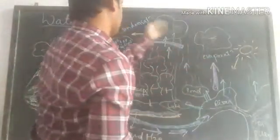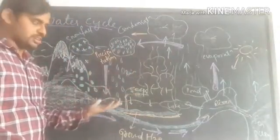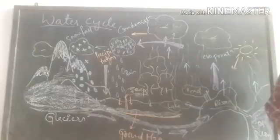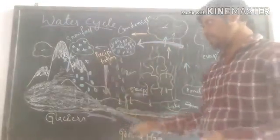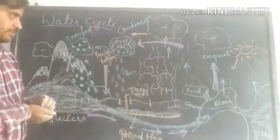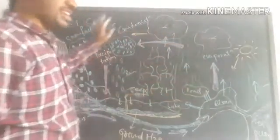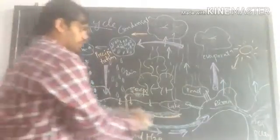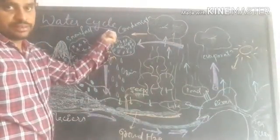The water cycle contains repeated evaporation, condensation, and sometimes precipitation, which causes rainfall. The water quantity will be constant with the help of the water cycle. That is the importance of the water cycle.